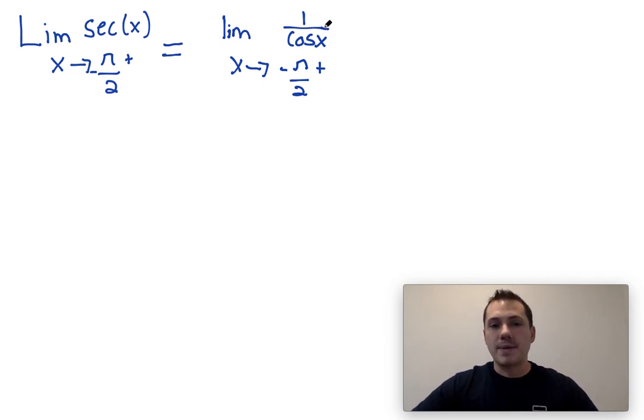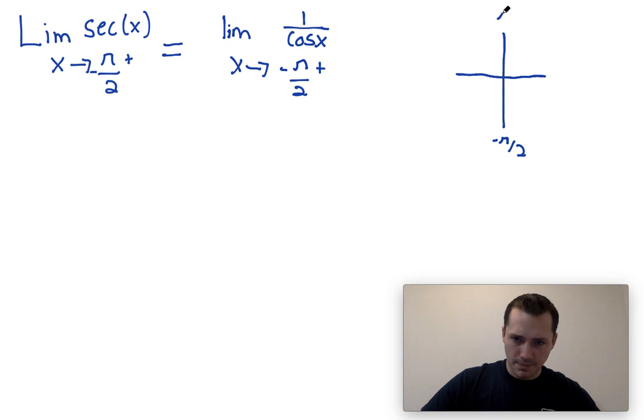Let's think about what happens if we put negative π over 2 in for cosine of x. You might recall from the unit circle that negative π over 2 would be over here, positive π over 2 would be over here. We choose to go counterclockwise if we're dealing with the positive direction, and we go counterclockwise when we're dealing with the negative direction.